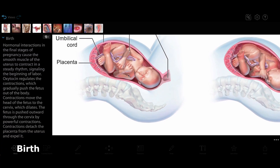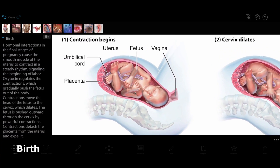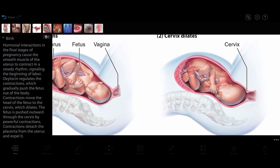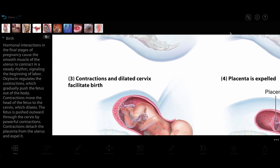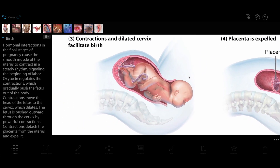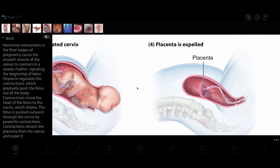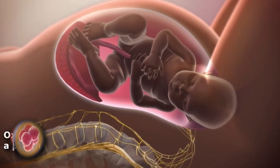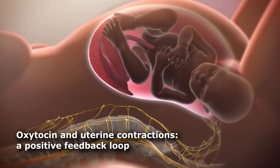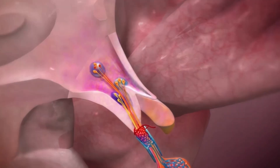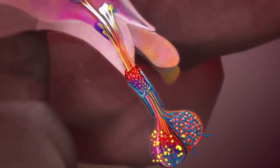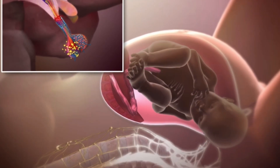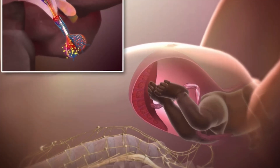Speaking of birth, let's take a look at the birth illustration for a quick overview. The stages in the illustration show how the smooth muscle of the uterus contracts, the cervix softens and dilates, and the fetus is pushed out, followed by the placenta. The positive feedback loop animation gives a more detailed explanation of how the stretch receptors in the uterine wall signal the hypothalamus in the brain to signal the posterior pituitary gland to release oxytocin, which triggers more frequent and intense contractions until the fetus leaves the mother's body.